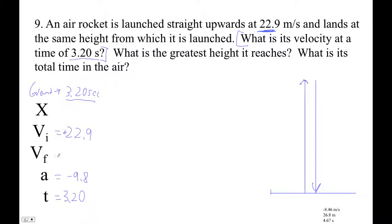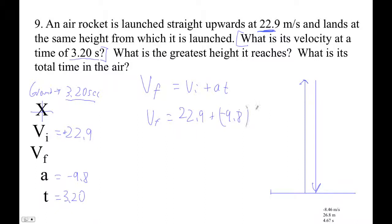We need to figure out the final velocity. I'll use vf = vi + at, so vf equals 22.9 plus negative 9.8 times 3.2. Here we go: 22.9 plus negative 9.8 times 3.2 gives us negative 8.46 meters per second.